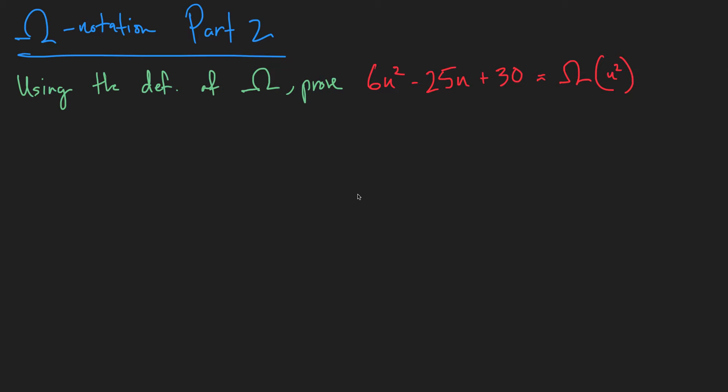Meaning that n squared is a lower bound on 6n squared minus 25n plus 30.